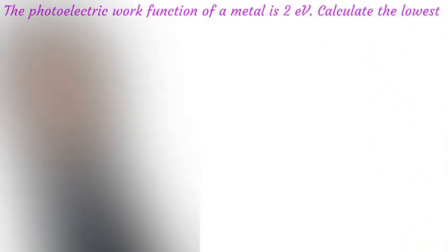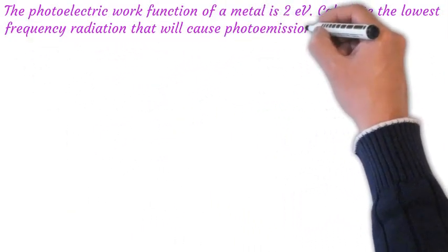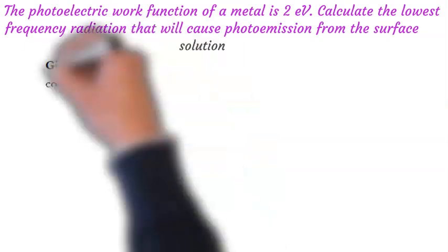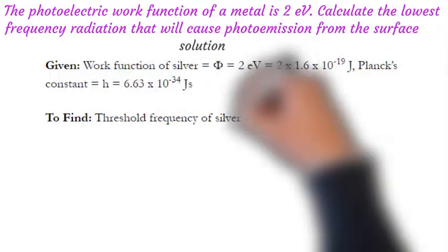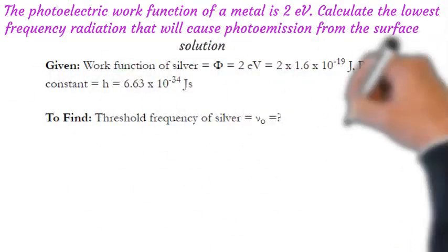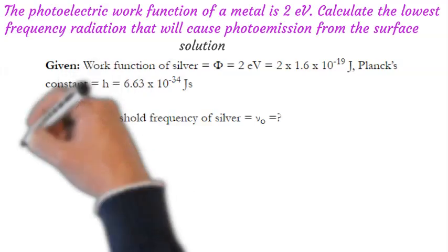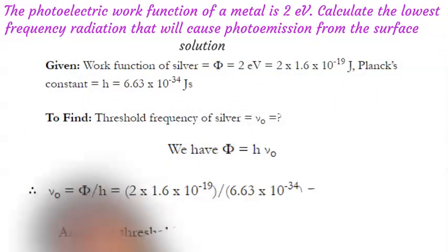The photoelectric work function of a metal is 2 electron volts. Calculate the lowest frequency radiation that will cause photoemission from the surface. We are given the work function and we know Planck's constant. We can use the work function formula to find the threshold frequency.